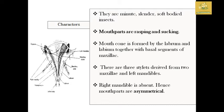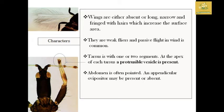Wings may be absent; when present, they are long and narrow with fringed hairs on the wing surface. Thysanoptera are weak flyers.